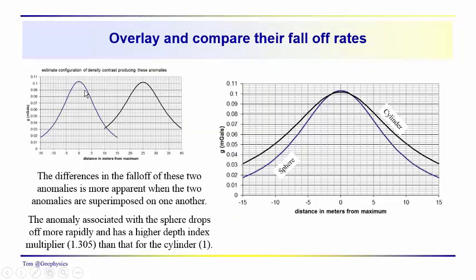Just we separated these anomalies out, but if we kind of bring them together at the same point and compare them, we can see that the cylinder drops off more gradually than the sphere. Somebody that's used to looking at data would say, this one is dropping off a little bit less rapidly than this one. This is probably the more compact object. This one is more extended in shape.